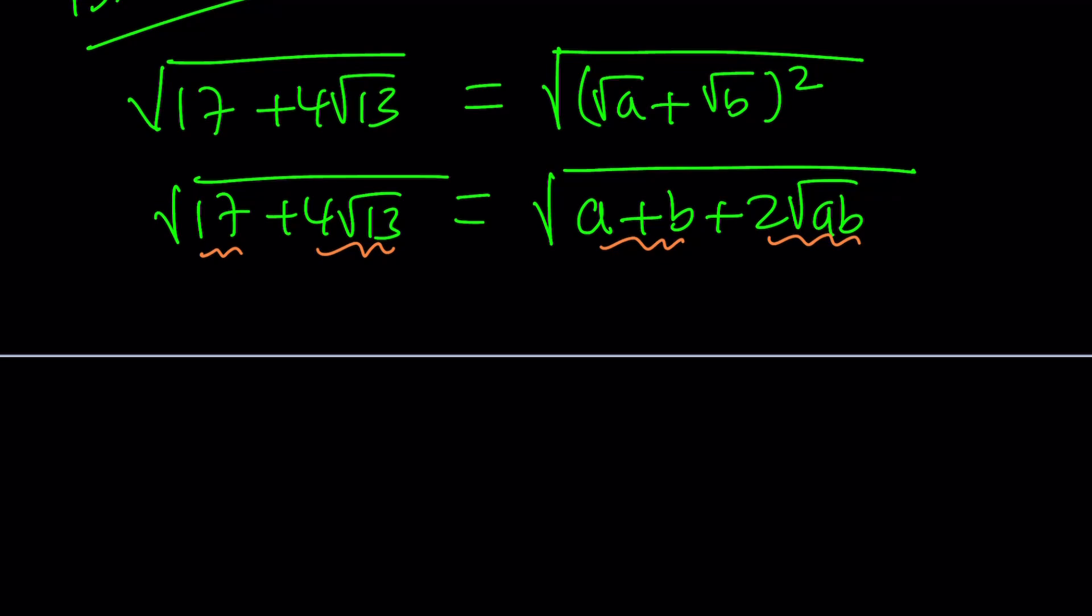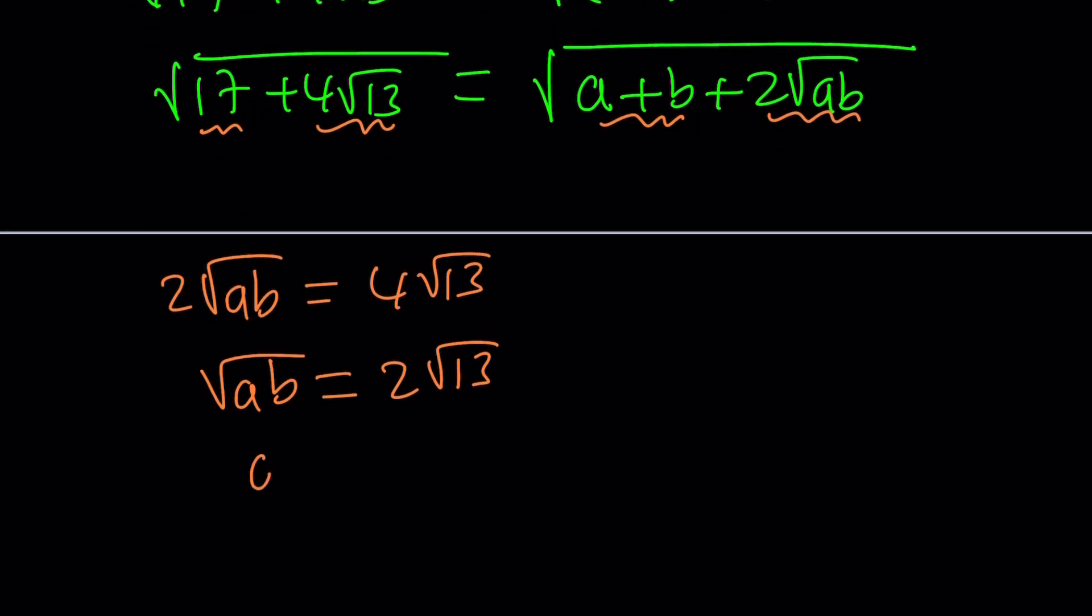Well, I kind of need to do the following. First of all, I need to break down this expression. So if 2 times the square root of ab is equal to 4 times the square root of 13, then from here, the square root of ab is equal to 2 times the square root of 13. Or I can write this as ab equals 4 times 13, which is 52. So I kind of have like two numbers whose product is 52. And from this, the sum will be 17.